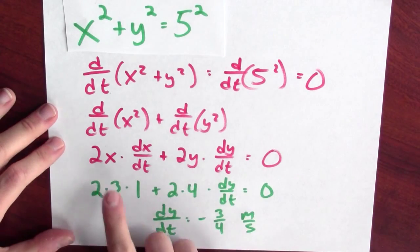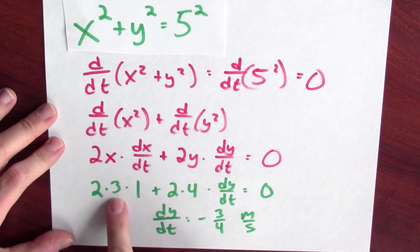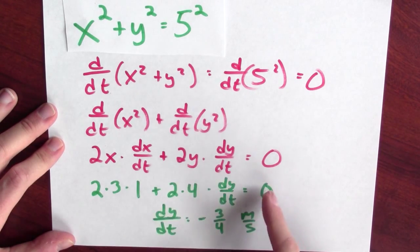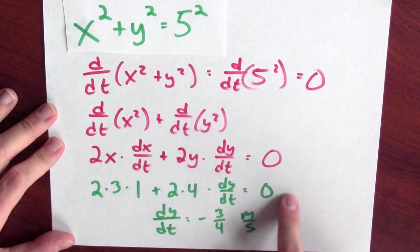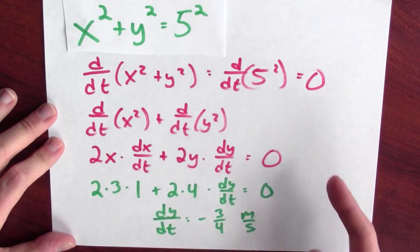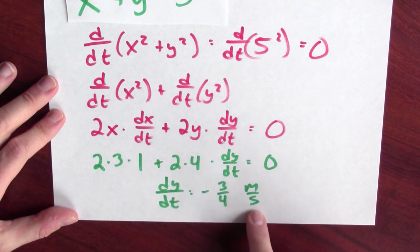Now, I'll evaluate. So now, I just want to evaluate, right? I know the values of x, dx dt, and y, right? At this particular moment, x is 3 meters, and dx dt is 1 meter per second. And y is 4 meters, and what I'm trying to figure out is dy dt. So once I plug in what I know, I get this equation, and then I can easily solve for dy dt. And when I solve for dy dt, I get that dy dt is negative 3 fourths meters per second.